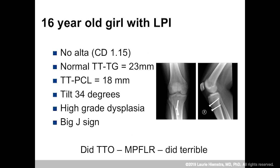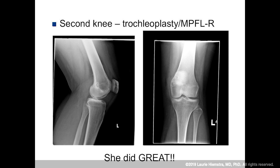A 16-year-old girl, no alta, high TTTG, normal TT-PCL, high-grade dysplasia, and a big J sign. When I originally saw her I wasn't doing trochleoplasty at that time, so she got an MPFL and TTO, which is probably what many people would do. She was stable, but she actually did terrible — she wasn't very functional, had a lot of pain, and wasn't quite happy. When she came back with her second knee I was a little smarter, recognized she had high-grade trochlear dysplasia, did a trochleoplasty and MPFL reconstruction — and she did great.